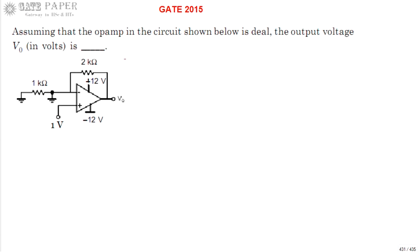If you are looking at this circuit, the inverting terminal is connected to ground, whereas the non-inverting terminal is connected to 1 volt.